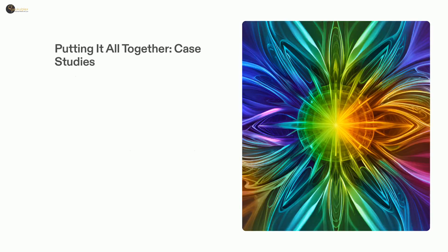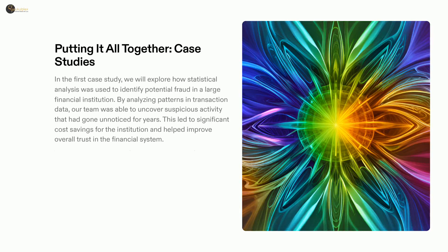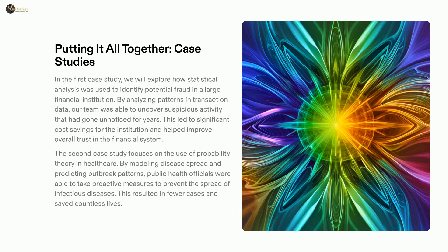We have been discussing the incredible power of statistics and probability and how they have made a real impact on our lives. In the first case study, our team was able to use statistical analysis to detect patterns in data that had gone unnoticed for years, saving a large financial institution an enormous amount of money. In the second case study, probability theory applied to healthcare data allowed public health officials to take proactive measures to prevent the spread of infectious disease, saving countless lives. It is clear that the power of statistics and probability can be a tremendous force for good.